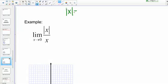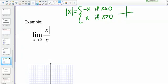The absolute value of X can be written as a piecewise function. Negative X if X is less than or equal to 0, and X if X is greater than 0. Those pieces just represent the two sides of the V that you see on the absolute value function graph.